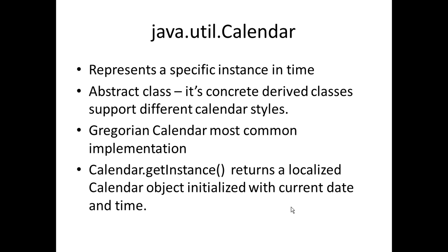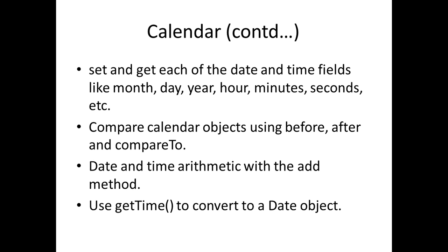Calendar has a method called getInstance which returns a localized Calendar object initialized with the current date and time — localized means local to a particular time zone or geographical area. The Calendar class has set and get methods for each date and time field like month, day, year, hour, minutes, and seconds. You can also compare Calendar objects using the before, after, and compareTo methods.